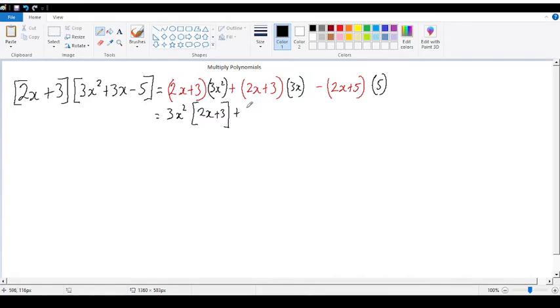So, you see plus the other term, which will be 3x here. 3x times 2x plus 3. Then, minus 5 times 2x plus 3.